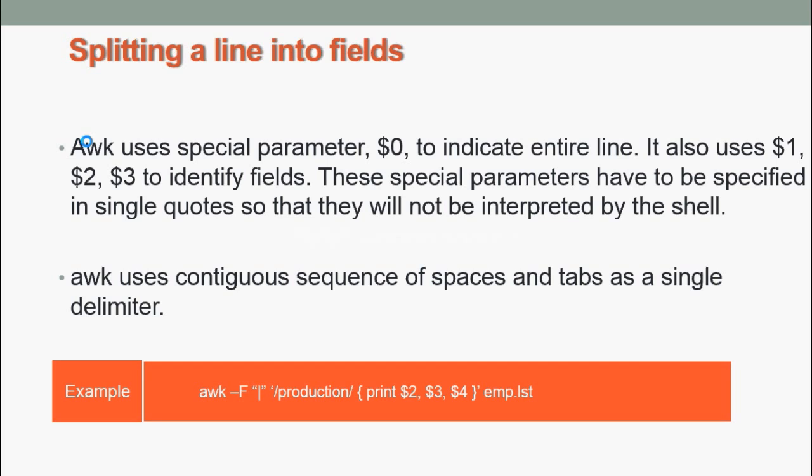We can see one example here: awk -F: /production/ {print $2, $3, $4} emp.lst. In this example, comma is used to delimit the field specification to ensure that each field is separated from the other by space so that the program produces readable output. The keyword production is searched for, and fields 2, 3, and 4 from emp.lst are printed.